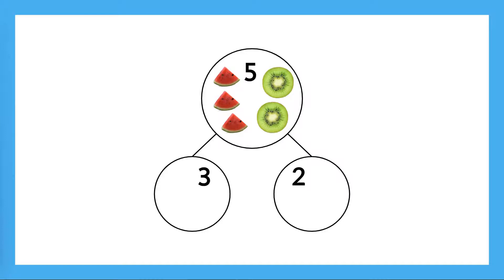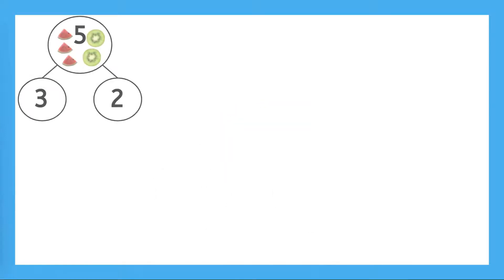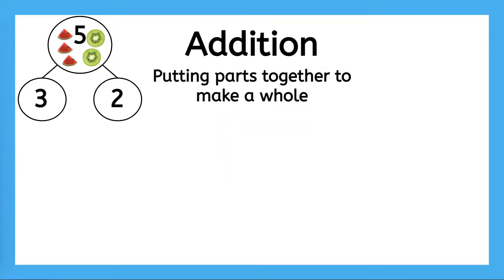We just solved this problem using a kind of math called addition. Addition, or adding, is when we put parts together to make a whole. There are some special math symbols we can use to show addition problems, too. This is called a plus sign. It goes between the parts that we're adding together. We added the parts three and two together, and we can show that by putting the plus sign between them. Now, this says three plus two.